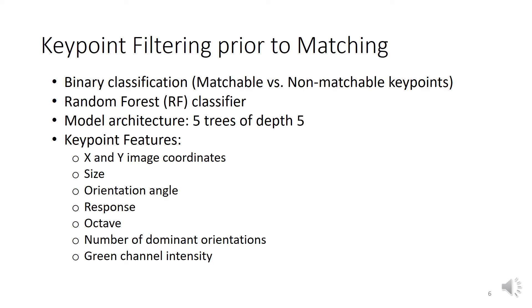We introduced the problem as a two-class classification between matchable and non-matchable keypoints, using a random forest classifier. We suggested eight pioneering training features that are simple enough to compute, but capture geometrical, textural, topological, and appearance properties. These features are the image coordinates, size, orientation angle, response, octave, number of dominant orientations, and green channel intensity of the keypoints. More sophisticated features were also examined, but they only added to the complexity and not to the accuracy of the algorithm.